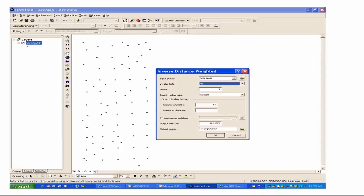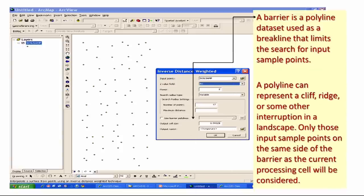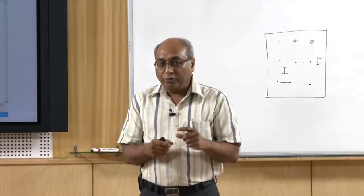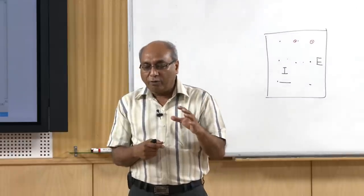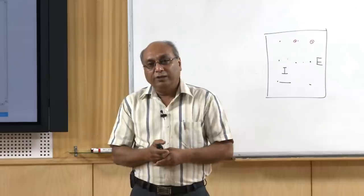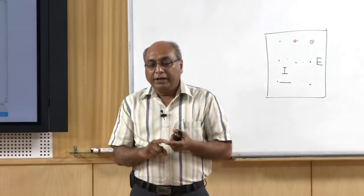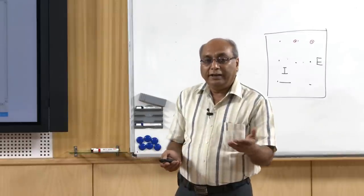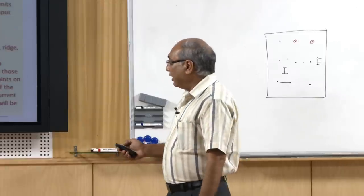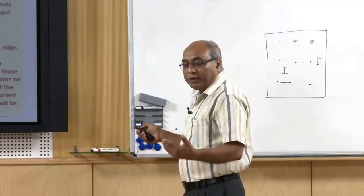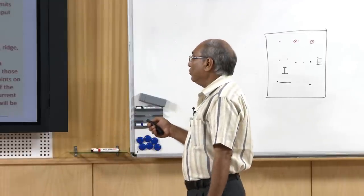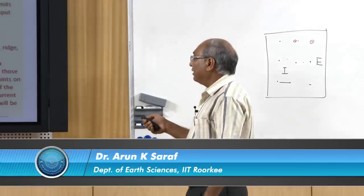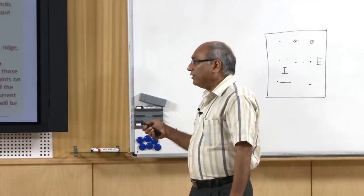A polyline barrier may be a fault line, quartz reef, dike, and so on. Even rivers can be used as barriers for surface water flow. A polyline dataset is used as a break line that limits the search for input sample points. Only those input sample points on the same side of the barrier as the current processing cell will be considered. Only the fixed radius variant of IDW supports barriers.